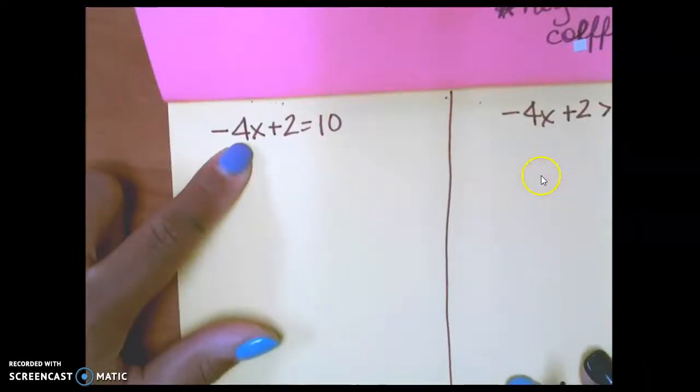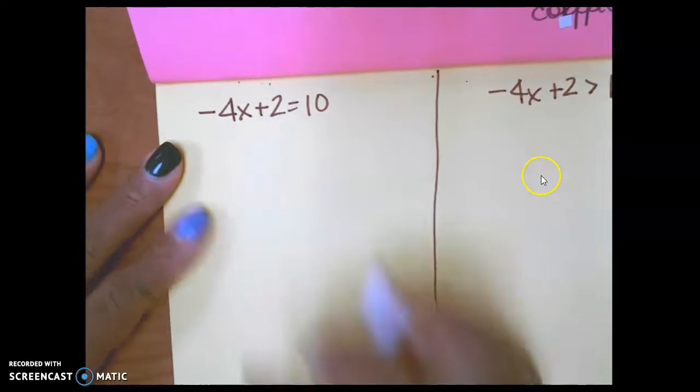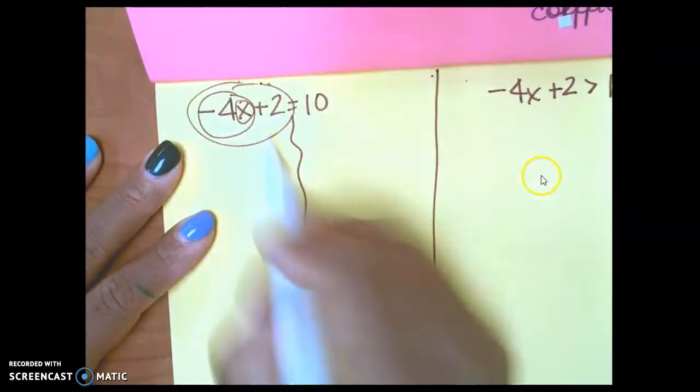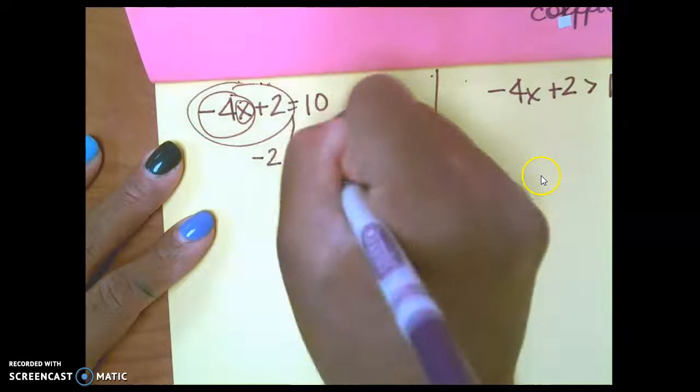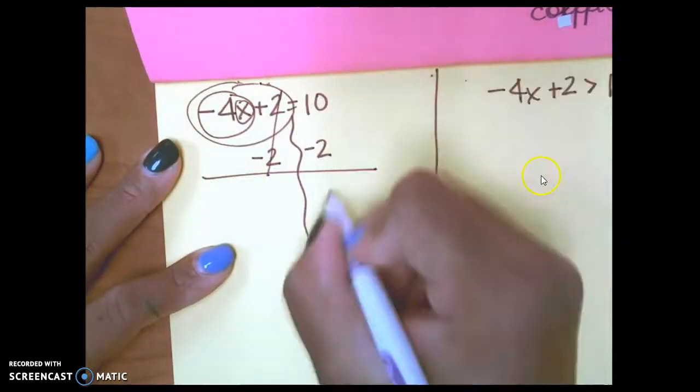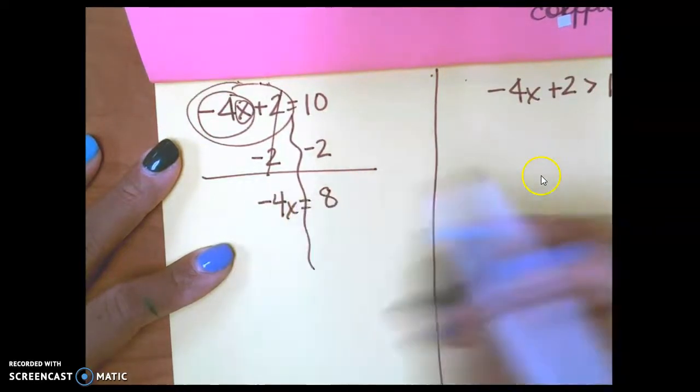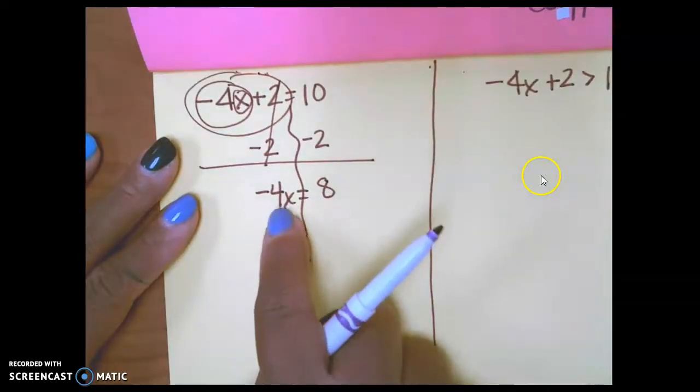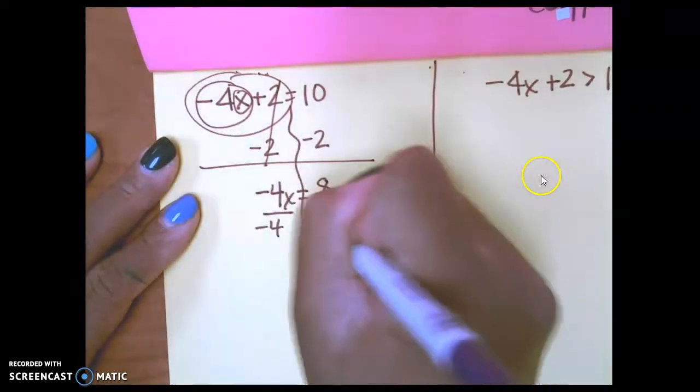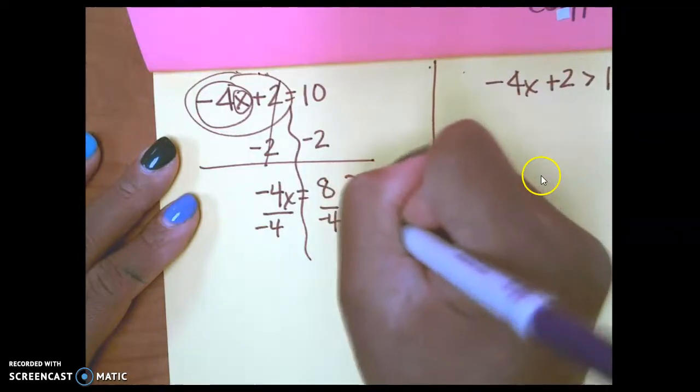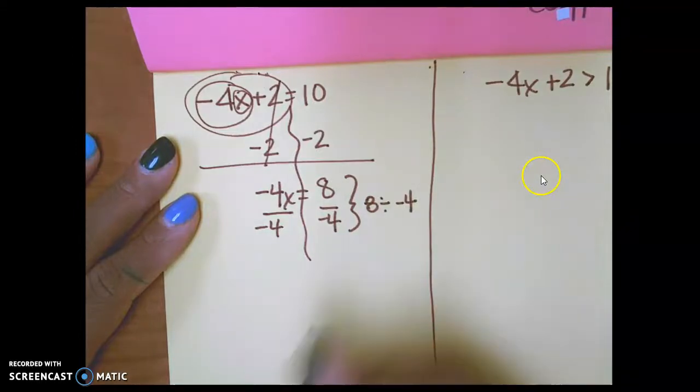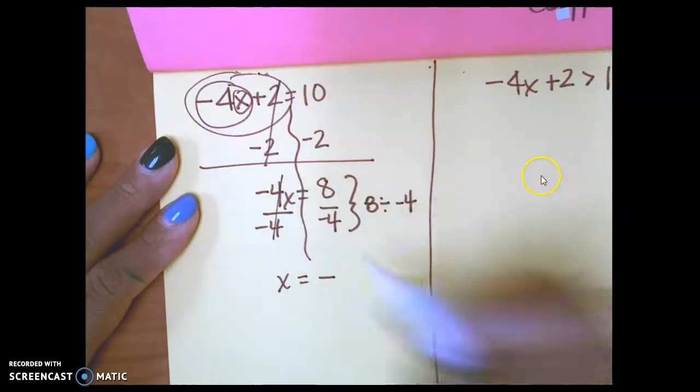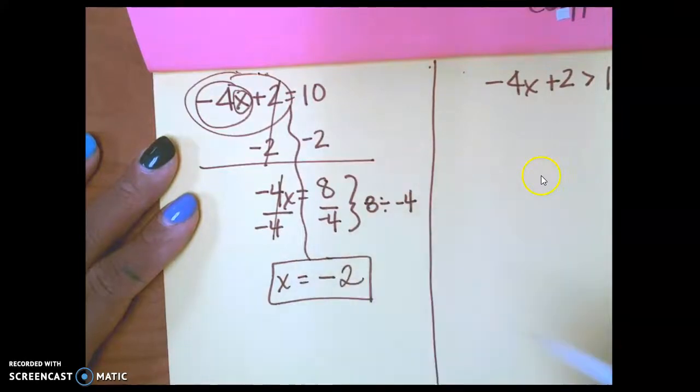Now, let's solve the equation first and then we'll knock out the inequality. So, draw your river. Circle the x. Circle the negative 4. Circle the plus 2. Get rid of the plus 2. Minus 2 on both sides. These cancel out. 10 minus 2 is 8. Negative 4x equals 8. Now, I've already added or subtracted. My next step is to multiply or divide. And in this case, it's divide because this is a multiplication problem. Negative 4 over negative 4. This is 8 divided by negative 4. Multiply or divide. It's an easy thought. Same signs are positive. Different signs are not. These 4s cancel out. 8 divided by 4 is 2. My solution is yet again negative 2.